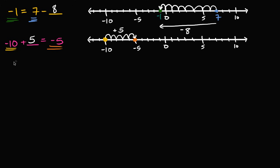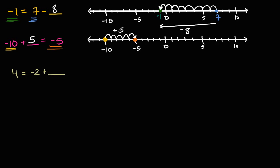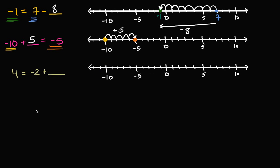Let's do another one. Let's say we have four is equal to negative two plus blank. We can do this the same way we've been doing others. Let's get our number line out here. Our goal is to get to four. We're starting at negative two. It's clear we're going to be moving to the right — we move six steps to the right. So we added six. Negative two plus six is equal to four.